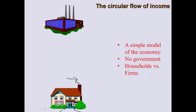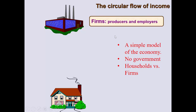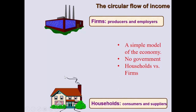Let's continue looking at the circular flow of income model which we started during the class lecture but couldn't finish due to time constraints. It's a simple model where two agents exist in the economy: the market sector — firms, factories, farms — and households. There is no government; it's only households versus firms. Firms are producers of goods and services and also employers of factors of production. Households are consumers of goods produced by firms and also suppliers of factors of production.